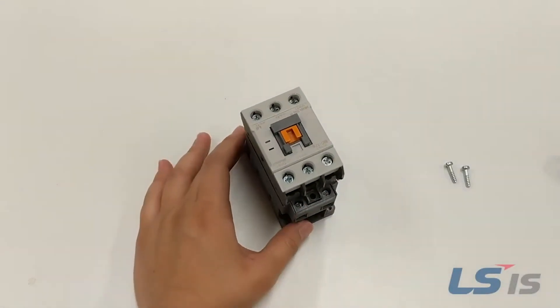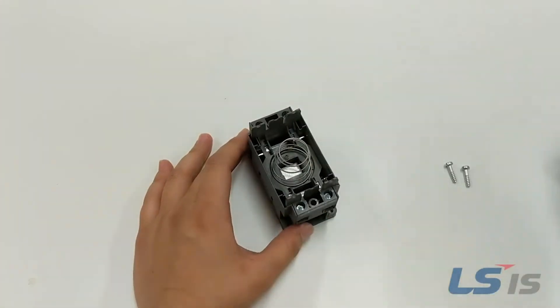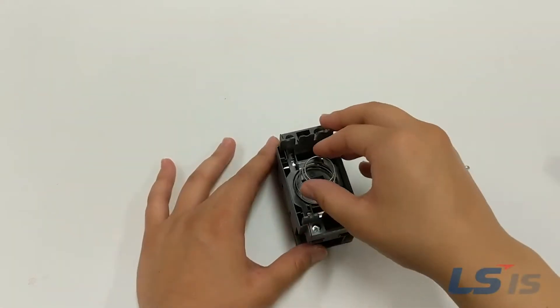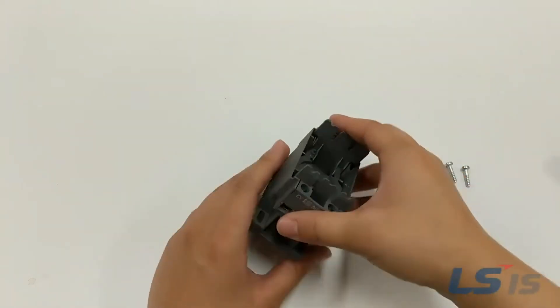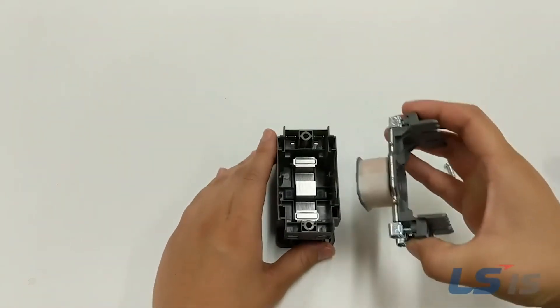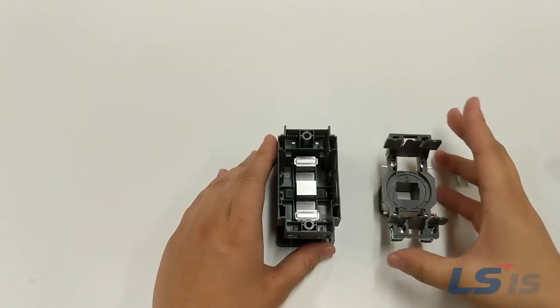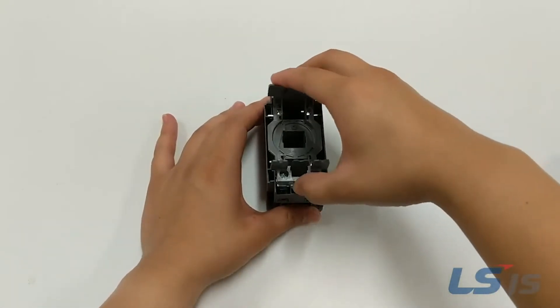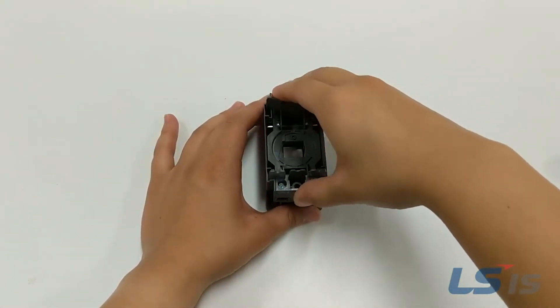Pull the top half off the bottom half and take out the spring. Then remove the coil by pulling up on both sets of A1 and A2 terminals. Install the new coil and place the spring back into the contactor with the larger end down.